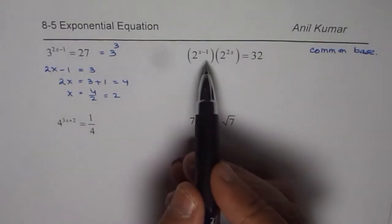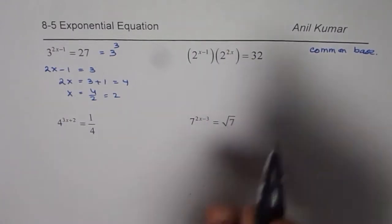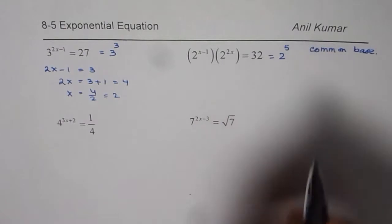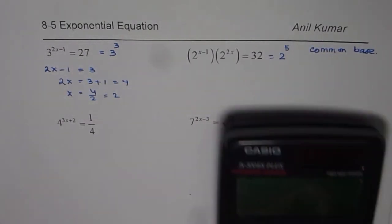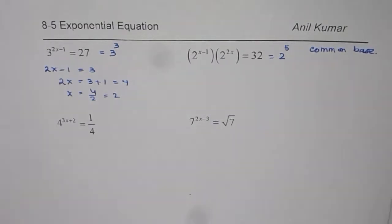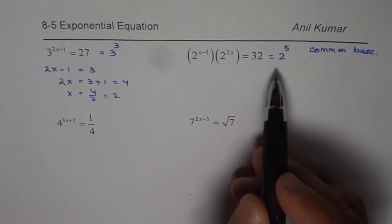So you can count the next one here is 2 to the power of x minus 1 times 2 to the power of 2x. The base is 2. We can write 32 as 2 to the power of 5. You can take help of calculator. So 2 to the power of 5 is equal to 32. So you can trial and error find the correct exponent.